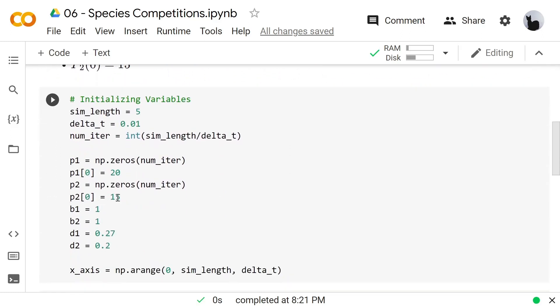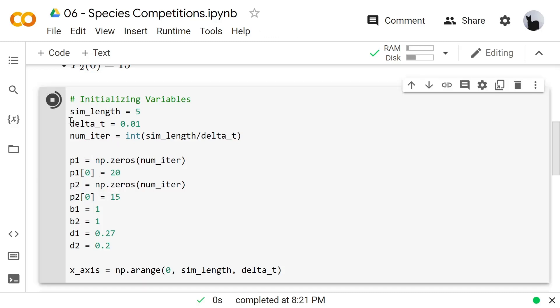As usual, we want to initialize the variables. The simulation length is 5 months and we define each population array as p1 and p2. And let's run this code.